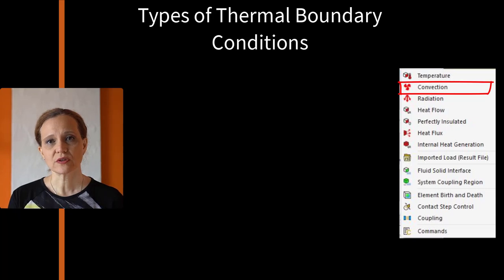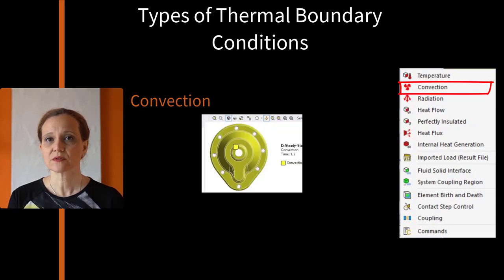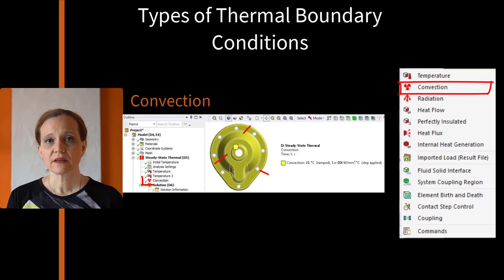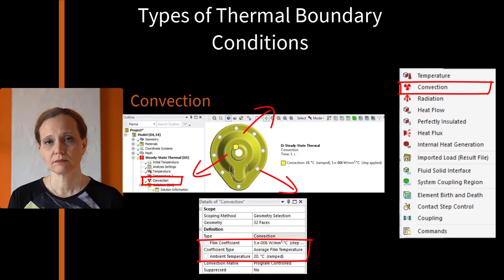Convection boundary condition implies that there is a fluid, such as water or air, that carries heat to or from the surface. However, in ANSYS mechanical, only the effect of the flow on the surface is simulated and actual flow is not modeled. Two items are required when applying convection boundary condition: Ambient temperature and heat transfer coefficient or film coefficient.